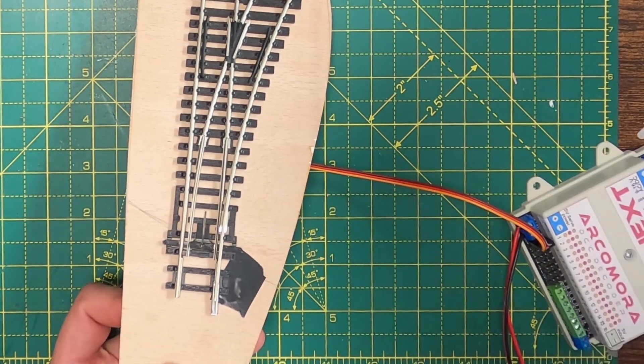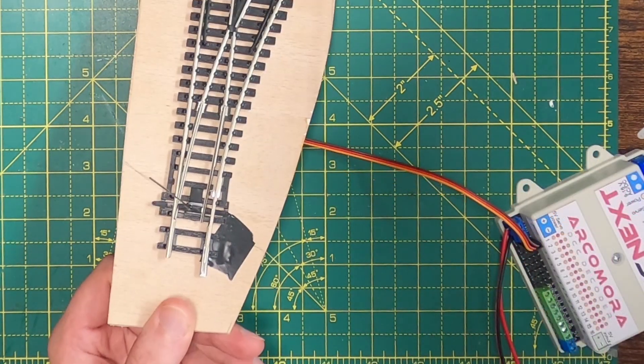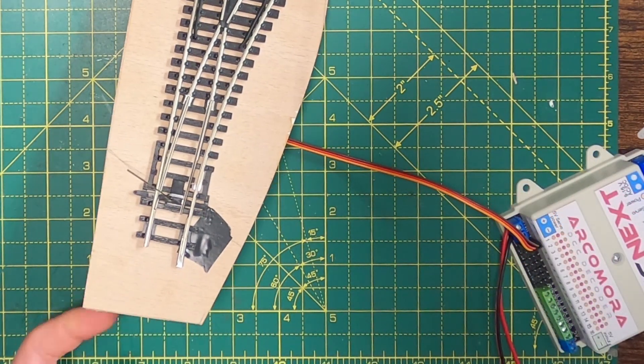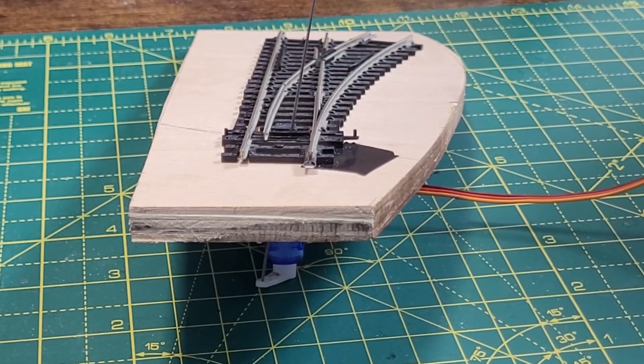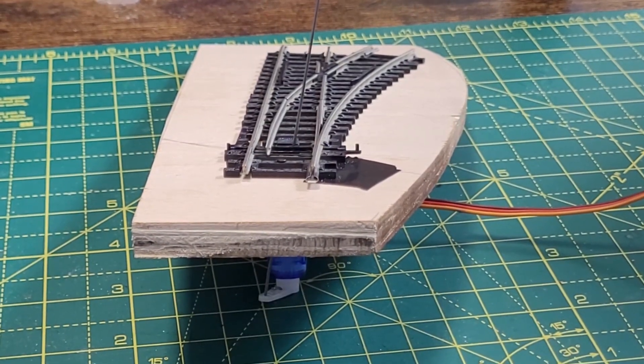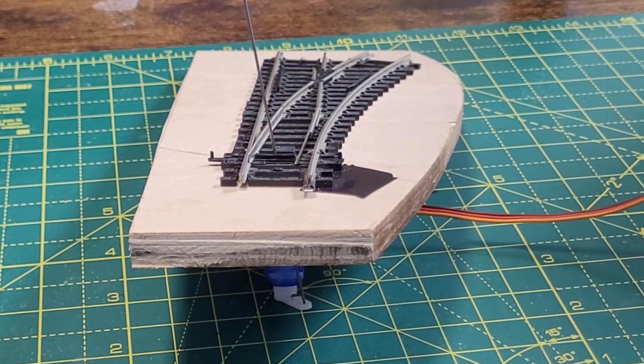Now I'm going to connect the servo to a servo controller and toggle between the thrown and closed positions to see what happens. And that all looks to be working really well. Obviously if this was in place on a real layout you'd just need to trim off the excess piano wire and that would be the point motor installed.